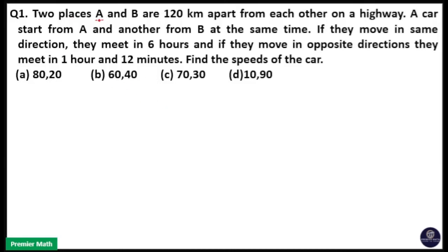Two places A and B are 120 km apart from each other on a highway. A car starts from A and another from B at the same time. If they move in the same direction, they meet in 6 hours. And if they move in opposite directions, they meet in 1 hour and 12 minutes. Find the speeds of the cars.